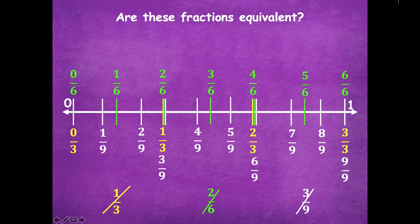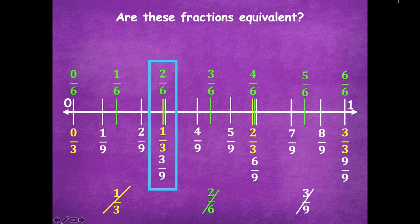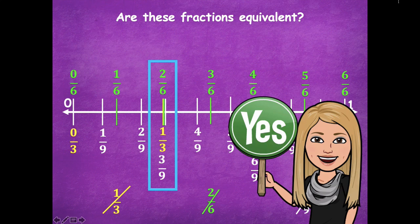So we're going to come back to our question: are these fractions equivalent? Find all of those fractions — where are they? If they're all on the same point on the number line, that means they're equivalent. If they're not on the same point, then they're not equivalent. Here they are — I have two-sixths, one-third, and three-ninths all at the same point on the number line. So yes, friends, these three fractions are equivalent to each other. When labeling different fractions on one number line, use a strategy like different colors to help you see those different fractions.